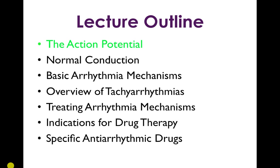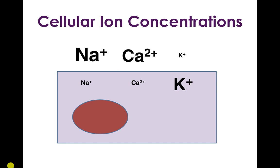Let's start with the action potential. Before we begin, we need to remember what the cellular ion concentrations are like in the body. Sodium and calcium concentrations are high extracellularly, and potassium concentrations are high intracellularly. Depending on the conductance of the cell membrane to the various ions, the cell membrane takes on a different potential.